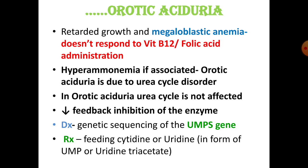Clinical features include failure to thrive in the child, retarded growth, and megaloblastic anemia. No patient will present labeling themselves with orotic aciduria — you must observe clinical signs and symptoms, develop a differential diagnosis, and consider orotic aciduria if a peripheral smear shows megaloblastic anemia alongside retarded growth in a child, especially if vitamin B12 and folic acid treatment shows no improvement.